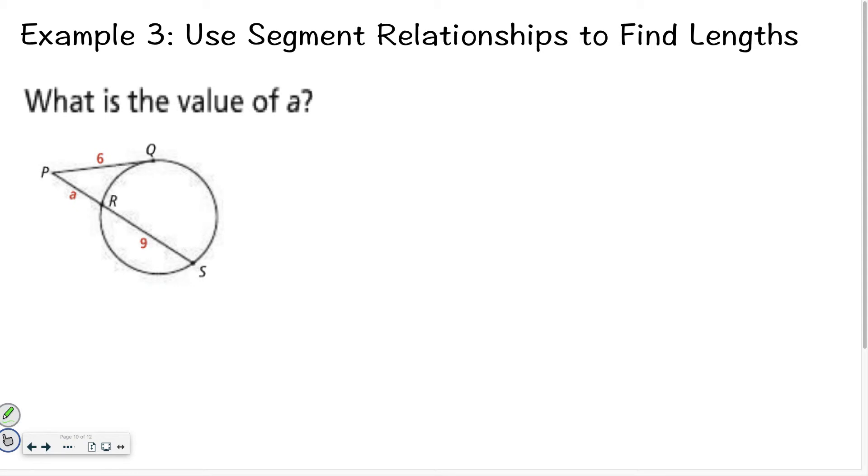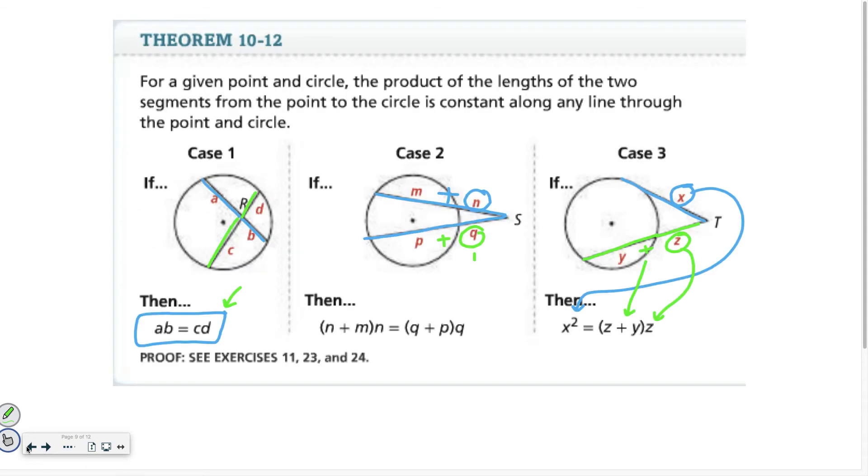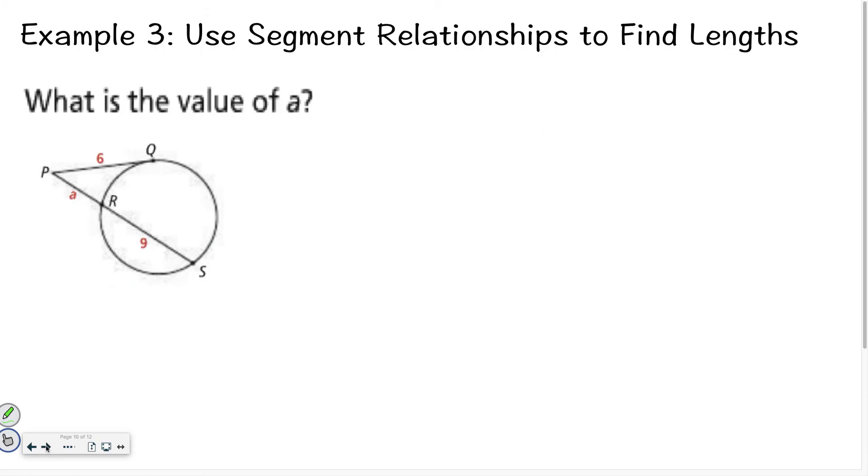So let's try solving this problem. If I referenced back to the last page it is a case three situation where I have a line that doesn't go through the circle, it's by itself, and then it has one line that does go through the circle. So I take the number that's lonely and I square it and I set it equal to the outside number times the sum of the other two segments, so a plus nine. Now if I simplify this I have 36 equals a times a is a squared plus 9a.